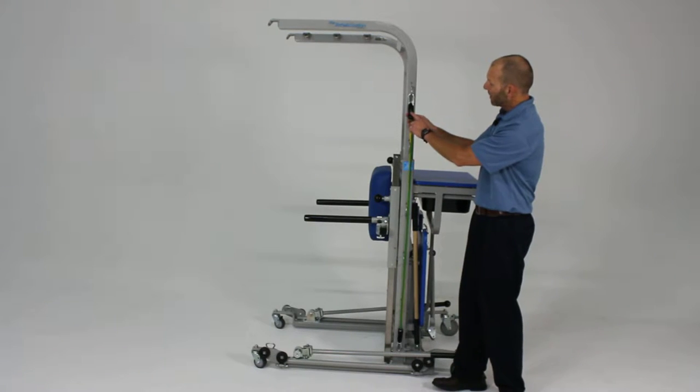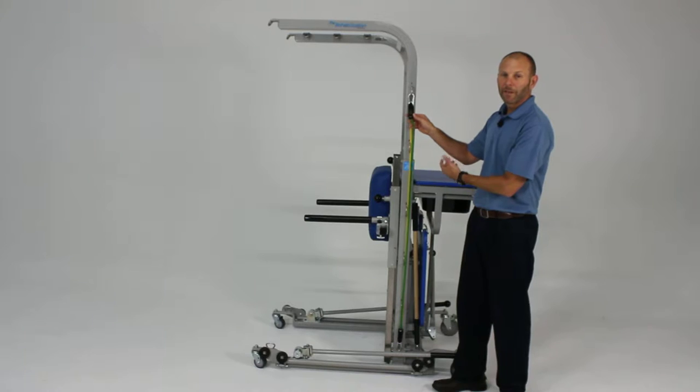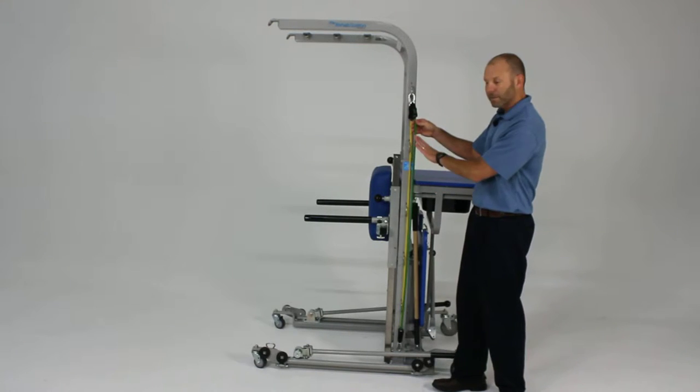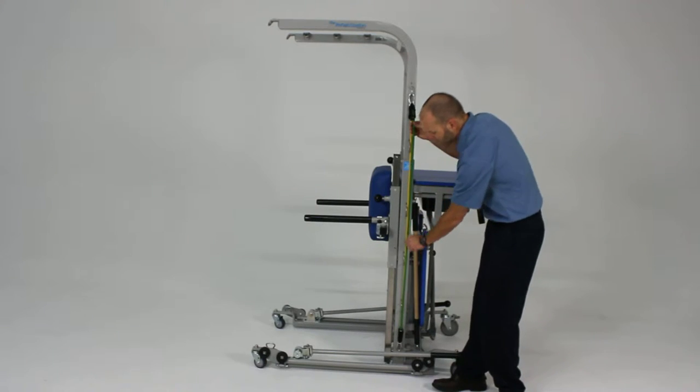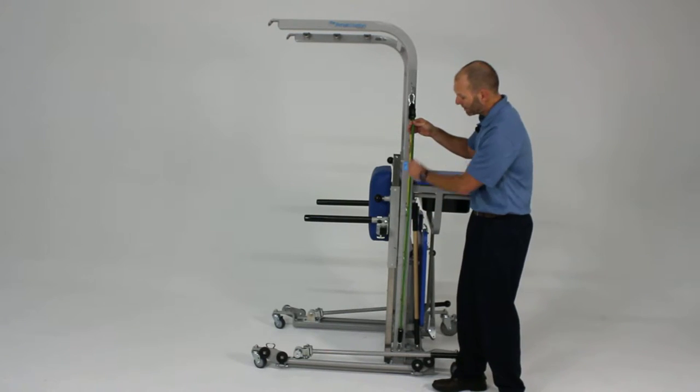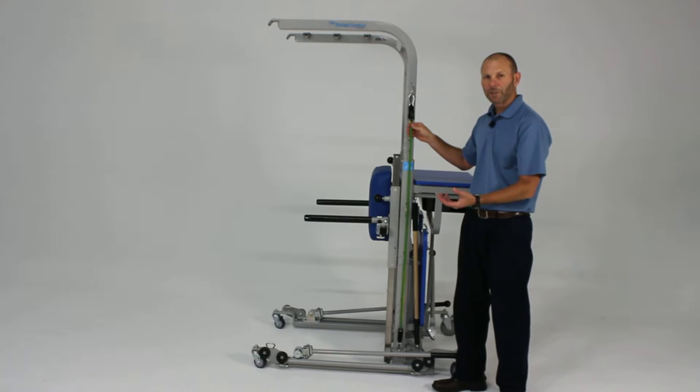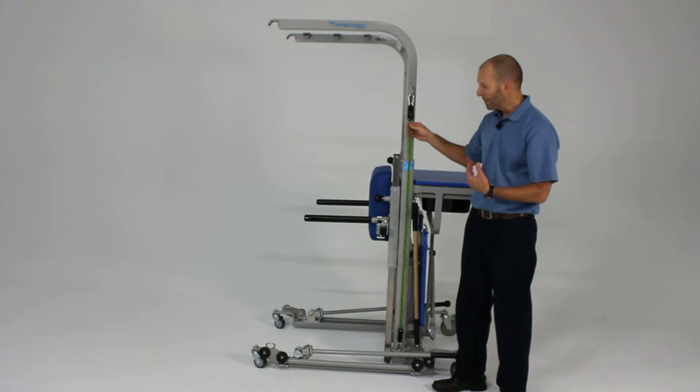They're identified by the approximate amount of poundage that they provide resistance for. The unique thing about these elastic cords is they have a safety fiber that extends the length of it, preventing overstretching and, if it were to break, preventing it from snapping back.